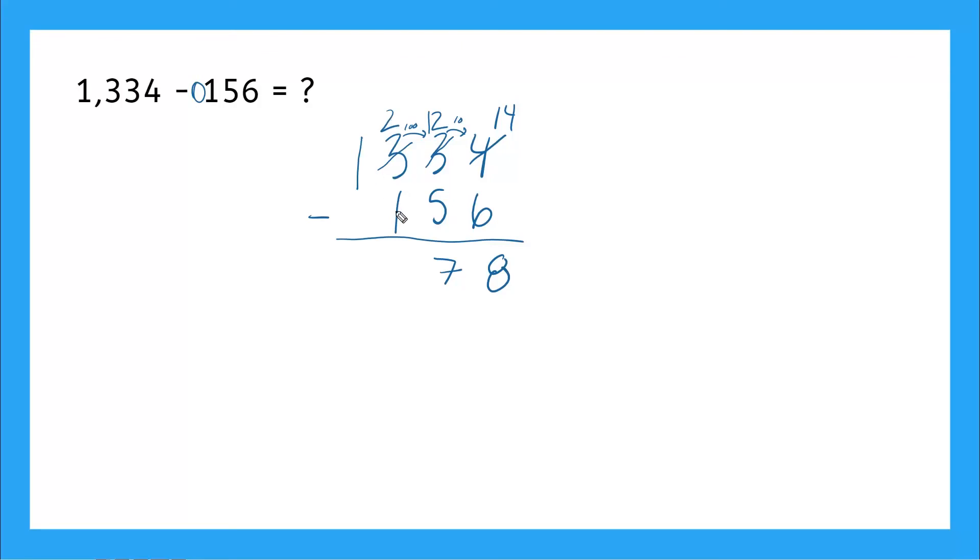And then I have two minus one here in the hundreds place, which gives me one. And then I have one minus, remember this is just a zero. There's nothing here. So one minus zero is one. So our answer is 1178.